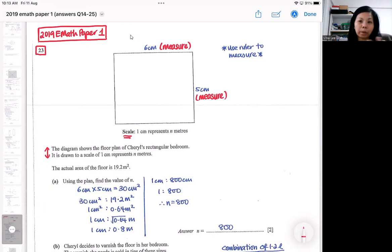The actual one will be quite accurate, so you measure on the actual O-level paper. After you measure, you will get 30 centimeters square. That means the floor area, the map area is 30 centimeters square, and it's going to represent 19.2 meters square. So here comes your scale topic. This is what we call the area scale.